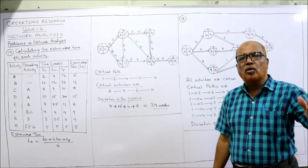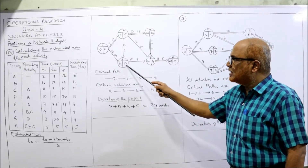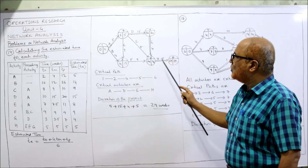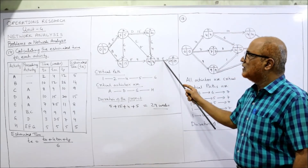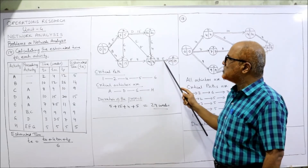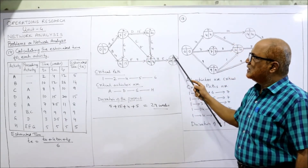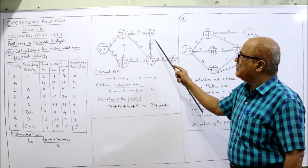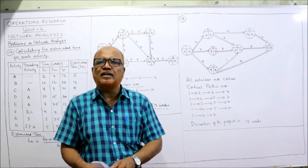The critical path is the longest path where EST and LFT values are equal at each node. Going through nodes 1→2→3→4→5→6: 5 + 15 = 20, 20 + 4 = 24, 24 + 5 = 29 — this is the longest path. The critical activities are A, D, G, H and the duration of the project is 5 + 15 + 4 + 5 = 29 weeks. Problem 17 is complete.